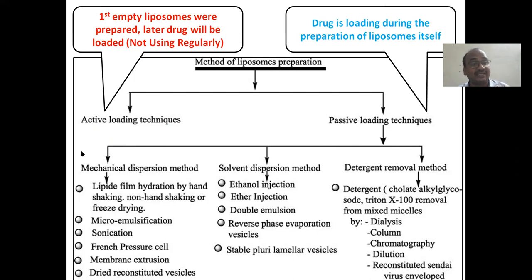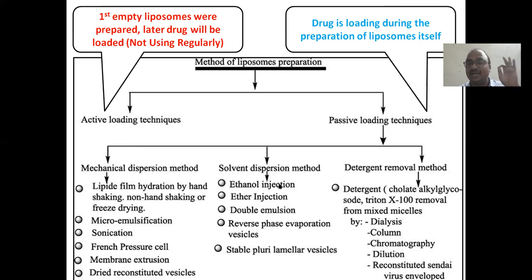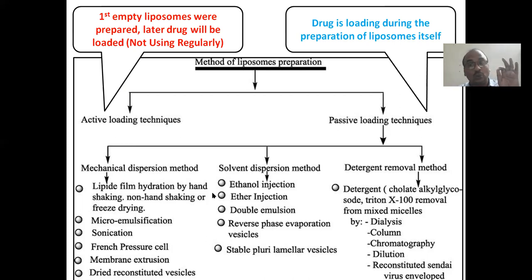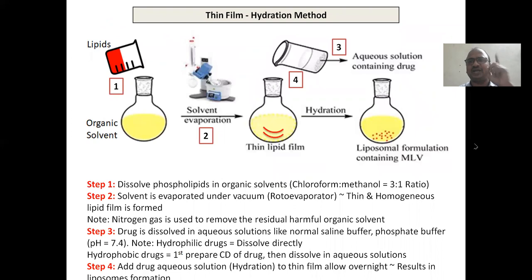The passive loading technique is classified into three categories: mechanical dispersion method, where we use mechanical instruments; solvent dispersion method; and detergent removal method. The name itself is the biggest clue. Keep all these names in your mind. I have made it very short and sweet for you — there are N number of methods.